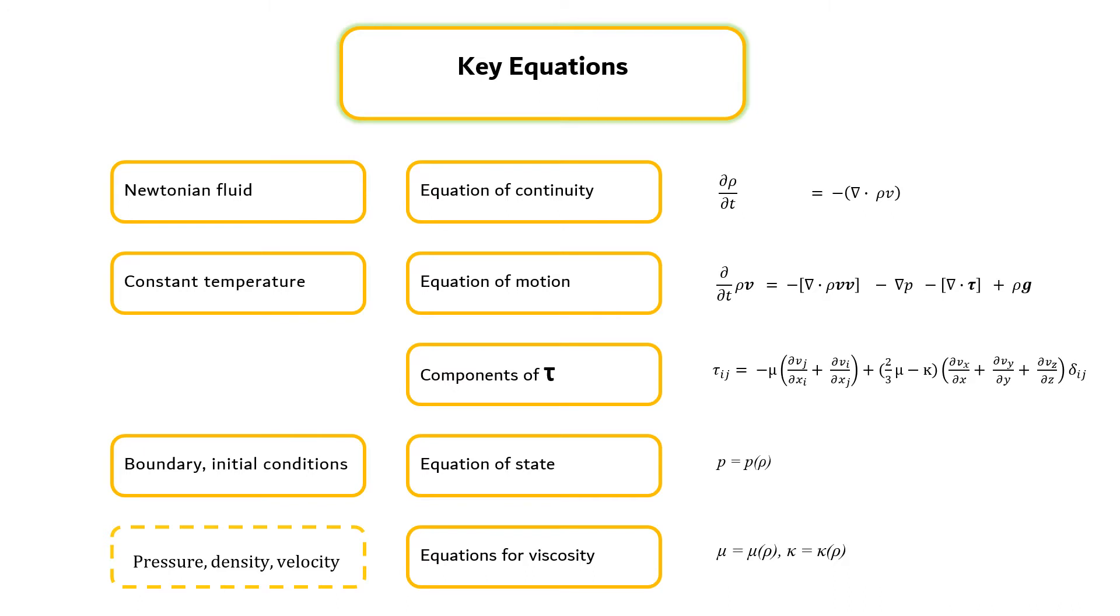For constant density and viscosity, we can use the equation of continuity and the Navier-Stokes equation, together with the initial and boundary conditions, to determine the pressure and velocity distributions.